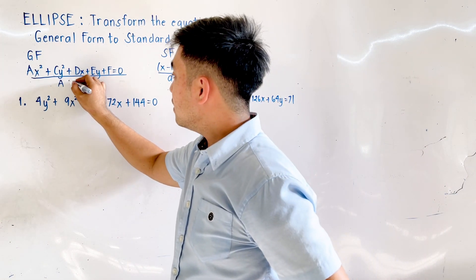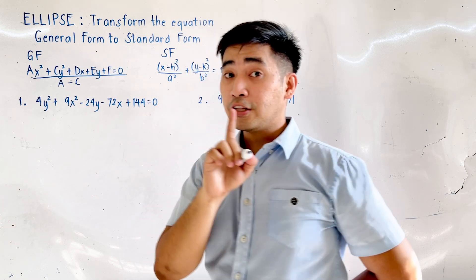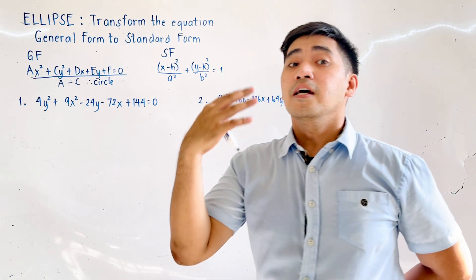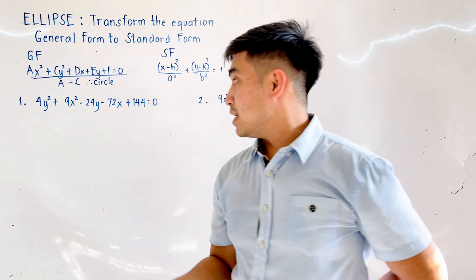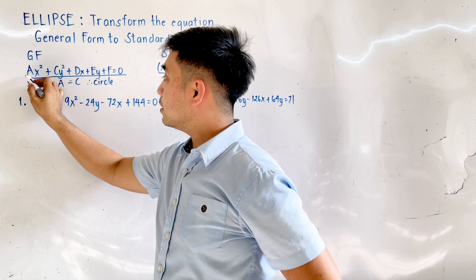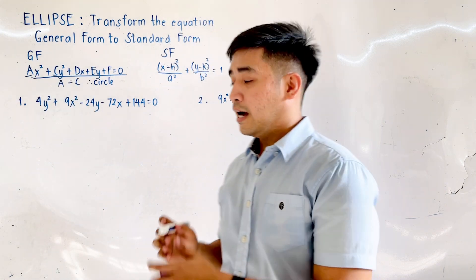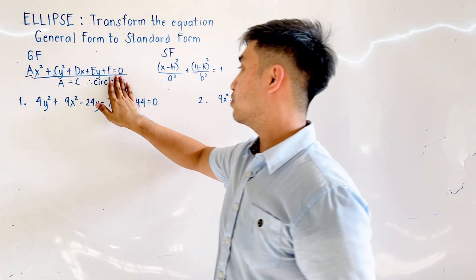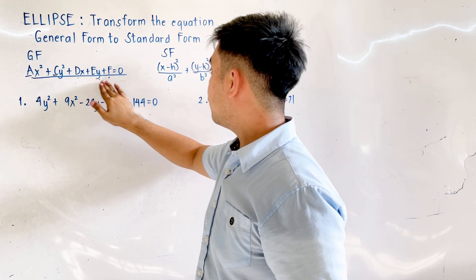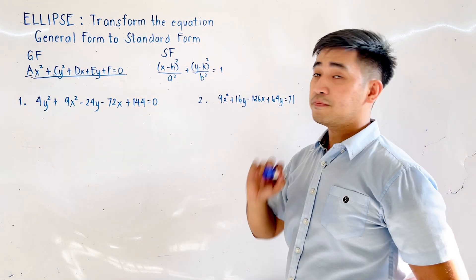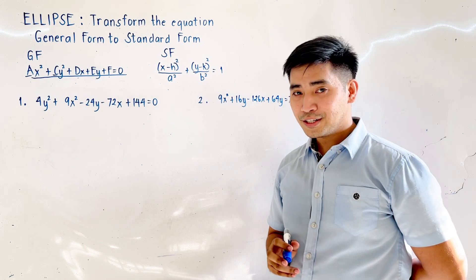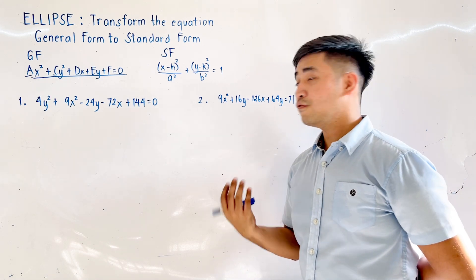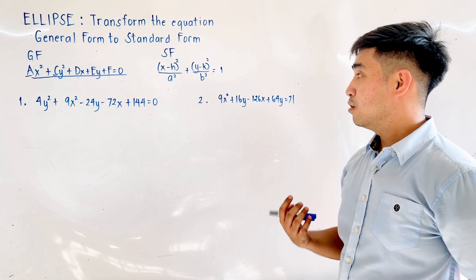Remember that if a is equal to c, it is not anymore an ellipse — it becomes a circle. Therefore, a should not be equal to c. The coefficients of x² and y² are a and c, and if a equals c, it becomes a circle. The standard form is given by: (x − h)² / a² + (y − k)² / b² = 1.